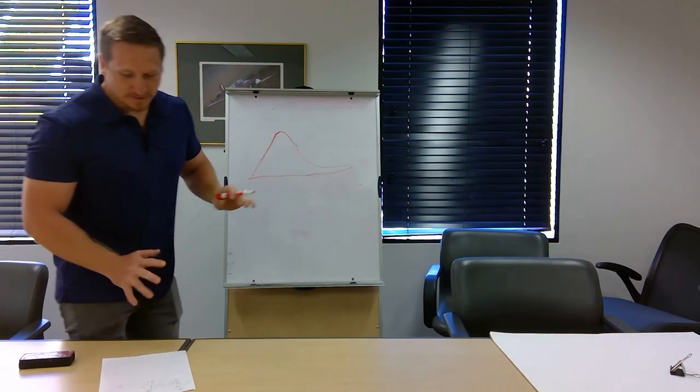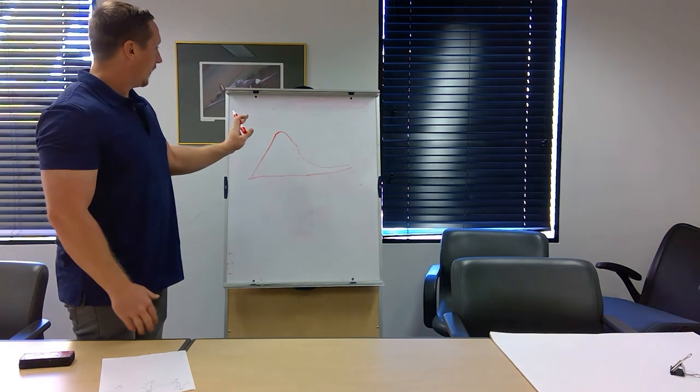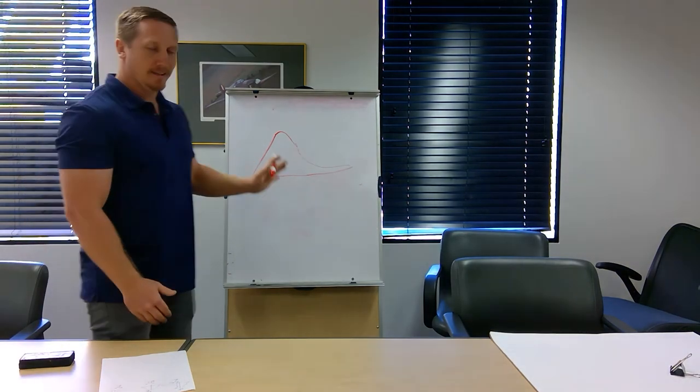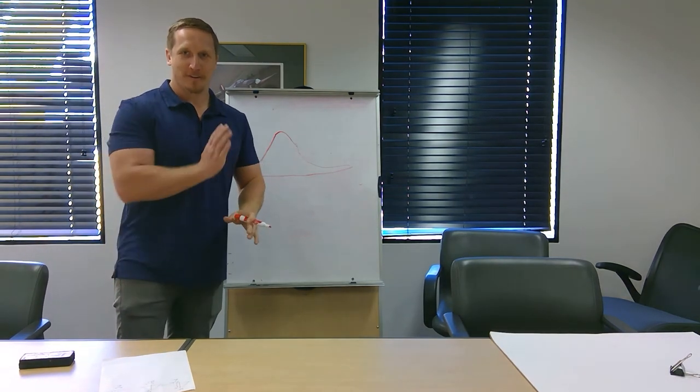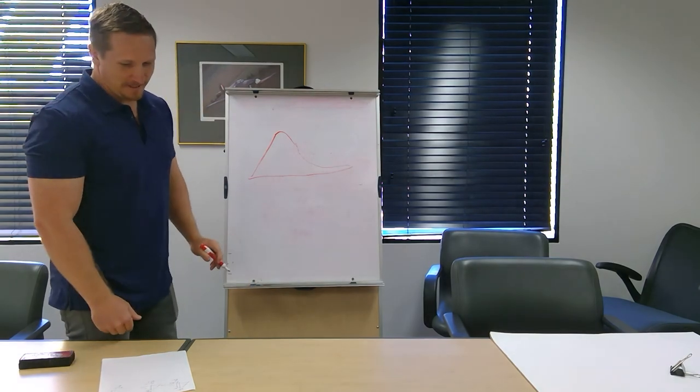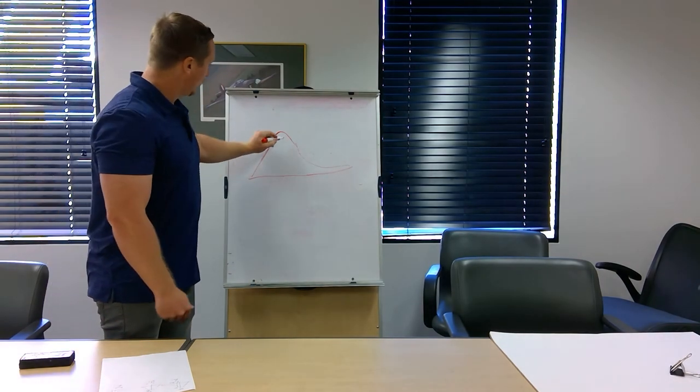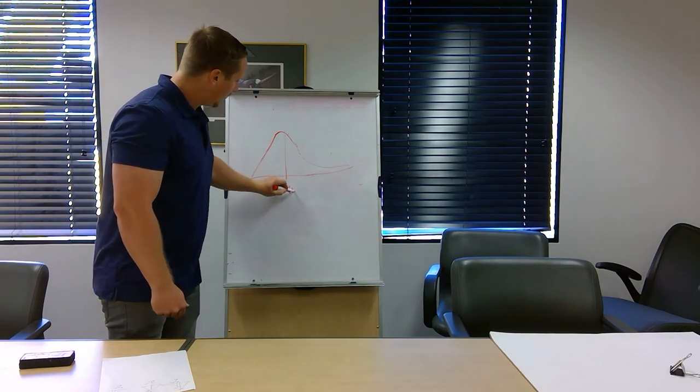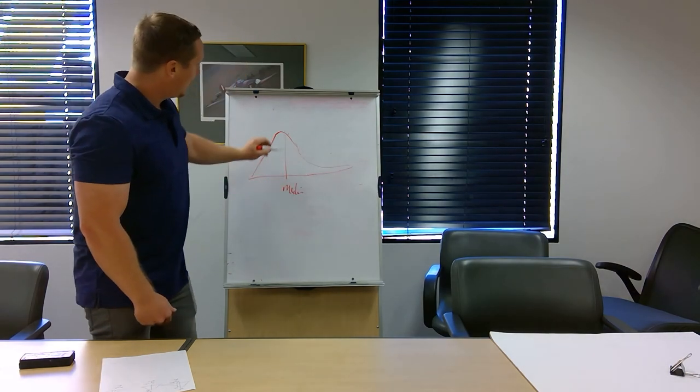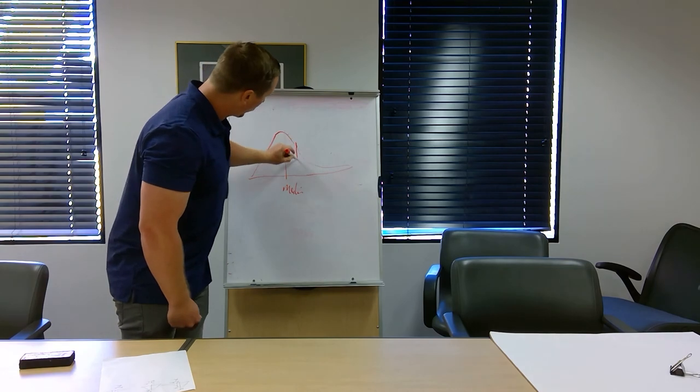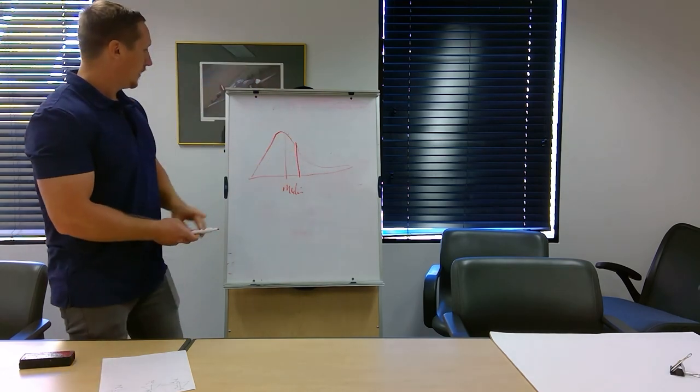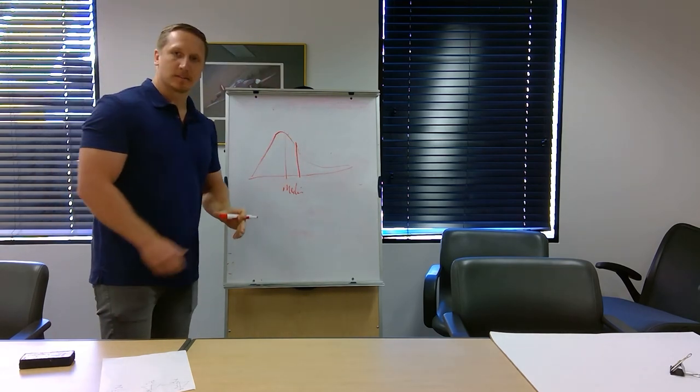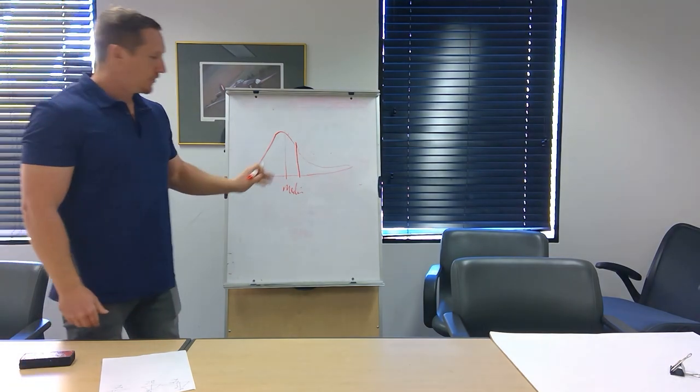So with the positively skewed data, unlike the normal distribution, the mean and the median are not the same. In positively skewed distributions, the median will be back here. And then the mean will be farther up the x-axis because there's larger numbers up here pulling the average up higher.